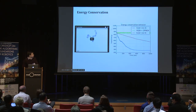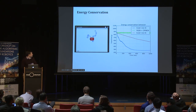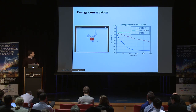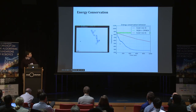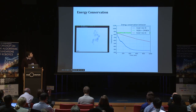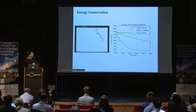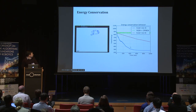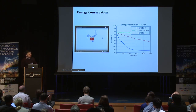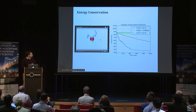We achieved all three goals. In the following examples, I use an N-link robot starting from a random state with a fixed time step of one millisecond. This graph shows that our method exhibits much better energy behavior compared to other conventional integrators. Even though the motion is quite chaotic, we can see the energy remains constant quite well.